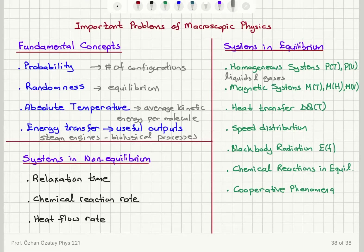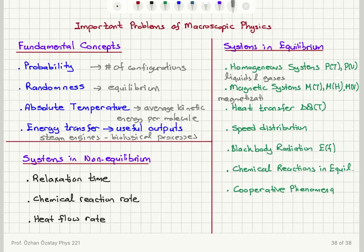For magnetic systems — for example, a system containing iron atoms — another macroscopic parameter of interest is magnetization M, which is the magnetic moment per volume. We would like to know how this changes with temperature, with the applied magnetic field, or with the volume.